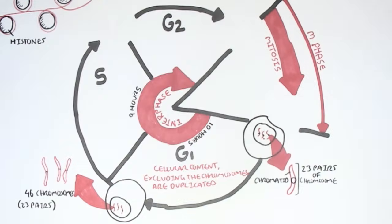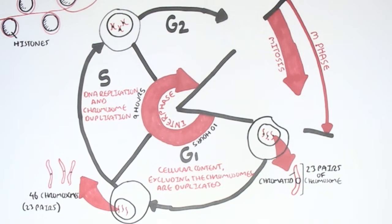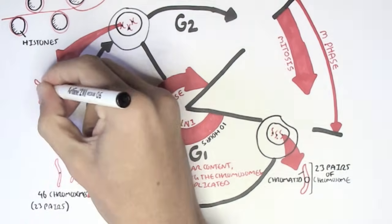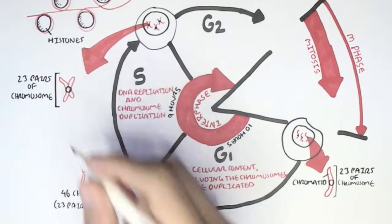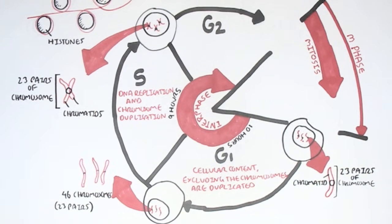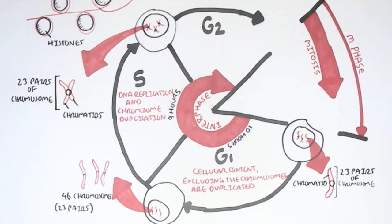Then this cell will enter the S phase, which goes on for about 9 hours. In the S phase, this cell will actually have DNA replication and chromosome duplication. At the end of the S phase, this cell will have duplicated chromosomes. It would still have 23 pairs of chromosomes. It will just have double the chromatids, which means that the cell at the end of S phase will have 46 chromosomes, but it will have 92 chromatids. This is because the chromosomes have duplicated. It doesn't mean the chromosomes are double in number.